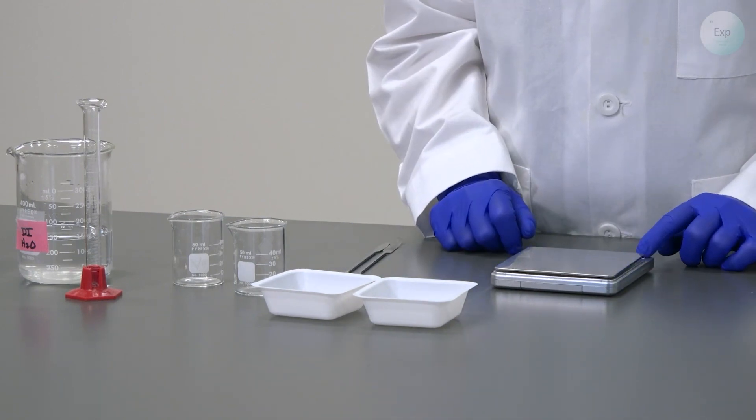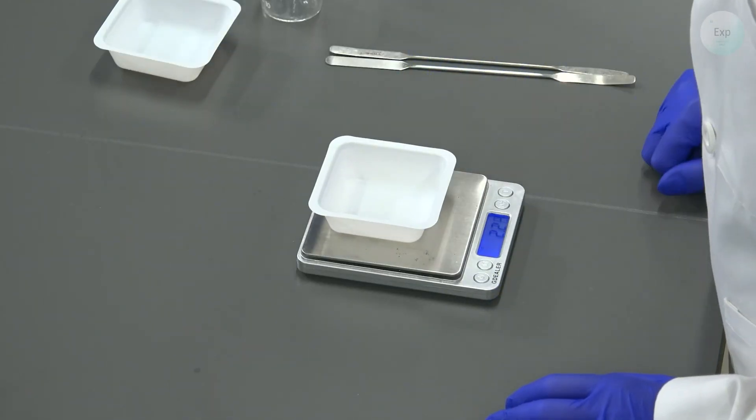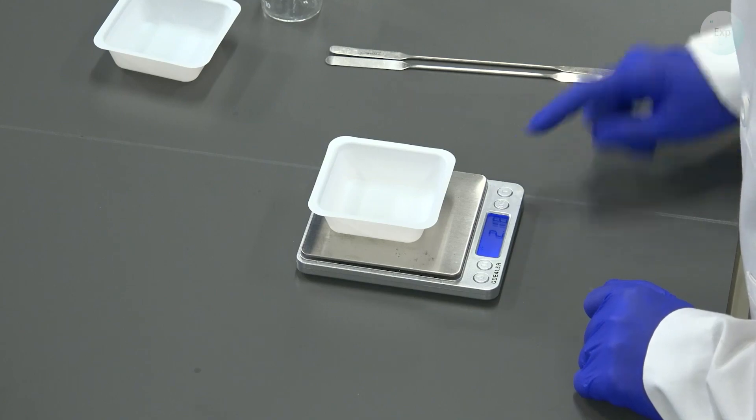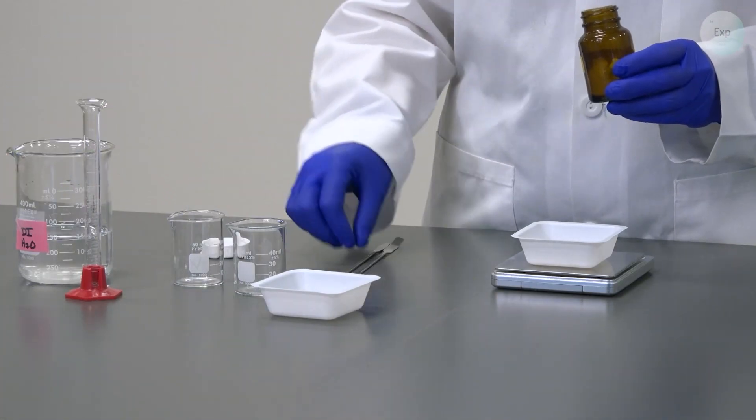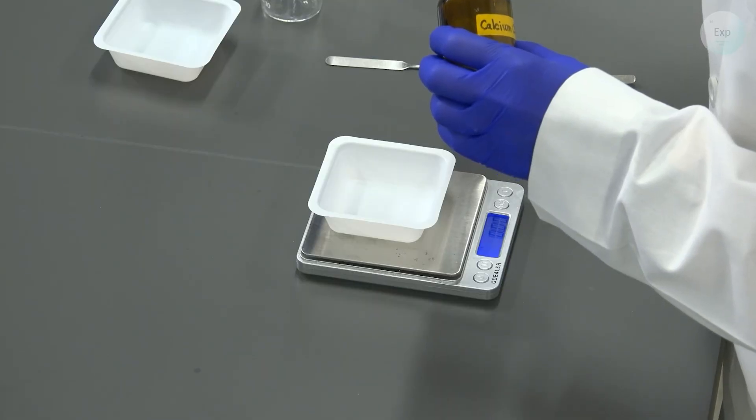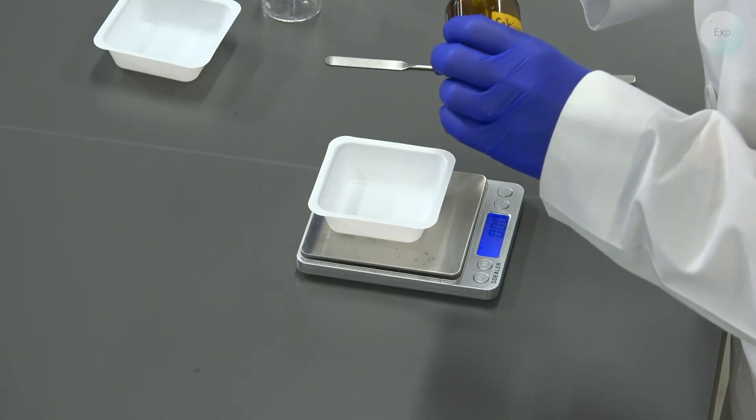The first step that we're going to take is turn on our scale. Take our first weighing boat, tare it, take the calcium chloride, open it up, and transfer 1.12 grams of calcium chloride in our weighing boat.